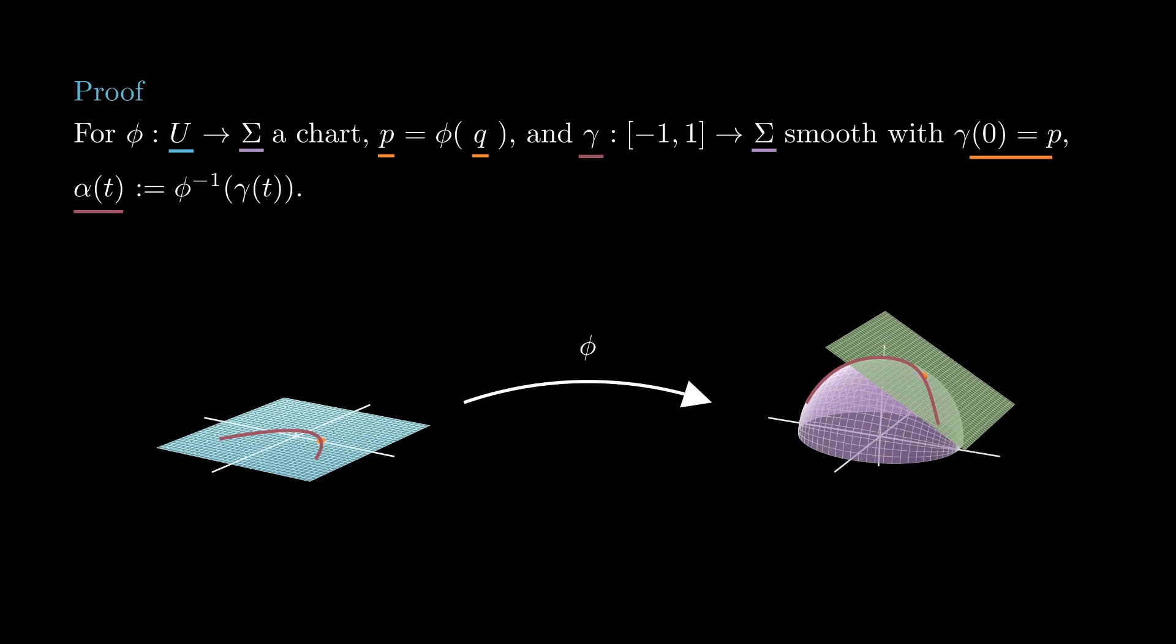Since now gamma equals phi of alpha, again by the chain rule we can write gamma prime at zero as a linear combination of the partial derivatives of phi, whose coefficients are precisely the components of alpha prime at zero.